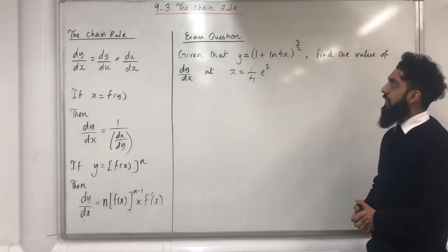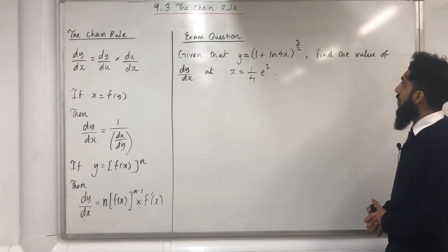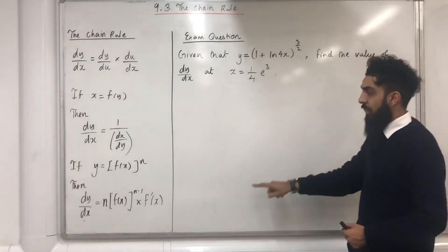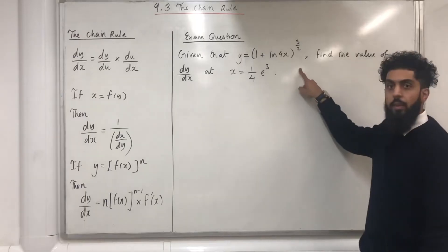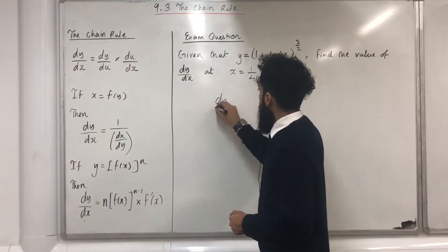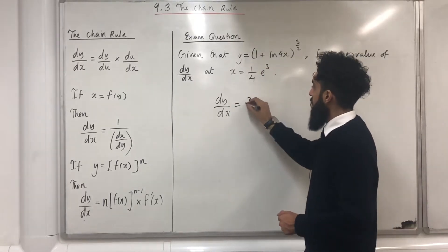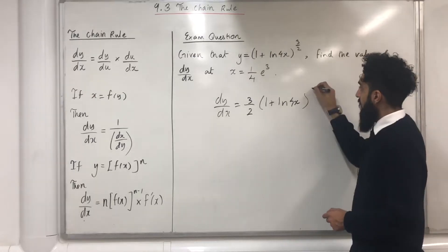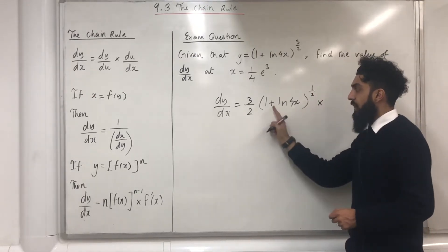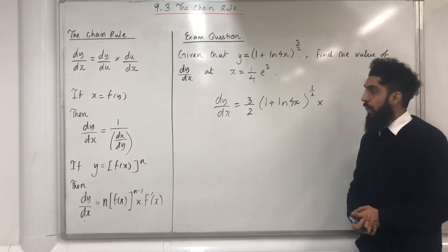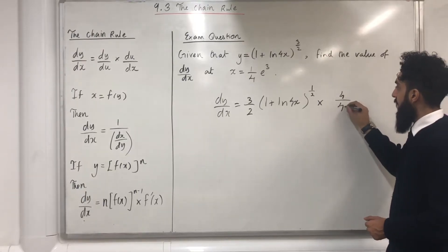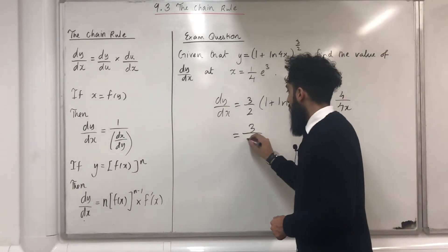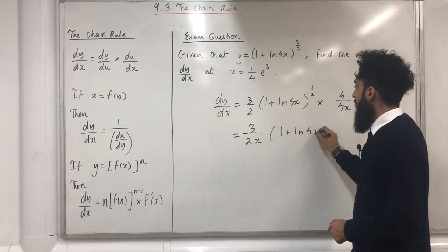Here is an exam question. Given that y equals (1 plus ln 4x) to the power 3 over 2, find the value of dy over dx at x equal to one quarter e to the power 3. Using the general rule: dy over dx — bring down the power 3 over 2 times (1 plus ln 4x) to the power one half, multiplied by the derivative of the inside. A constant differentiates to 0, and ln 4x differentiates to 4 over 4x. Simplifying, I obtain 3 over 2x times (1 plus ln 4x) to the power one half.